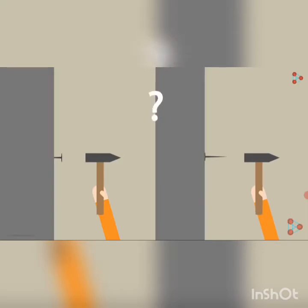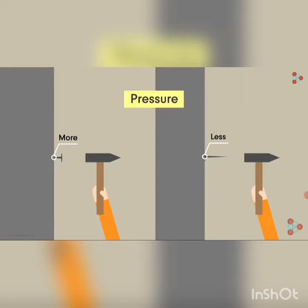What is the reason for this? The pressure applied by the tip of the nail on the wall is more than the pressure applied by the nail's flat surface. The area of the tip of the nail is very small compared to the area of its flat surface. This tells us that the area of the surface on which force is applied matters. Let us now formally define pressure.